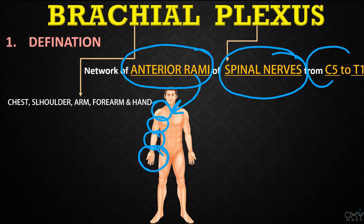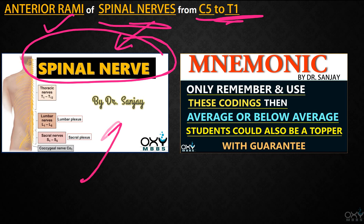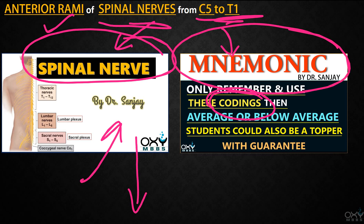You may be wondering what anterior rami, spinal nerves, and segments C5 to T1 are. Please don't worry — I have described all these things in detail in a separate video on spinal nerves, with the link in the description box below. Also, before continuing, please watch my separate video on mnemonics, as we use codings described there. That link is also in the description box below.